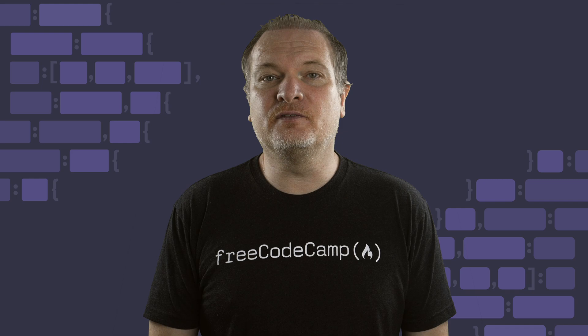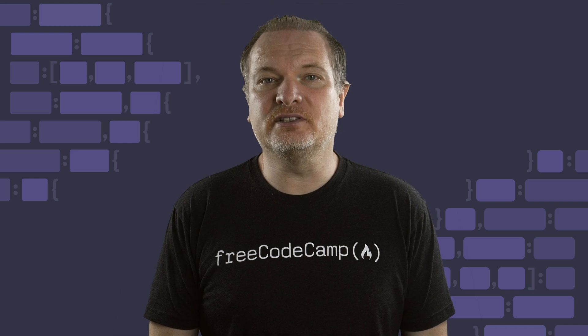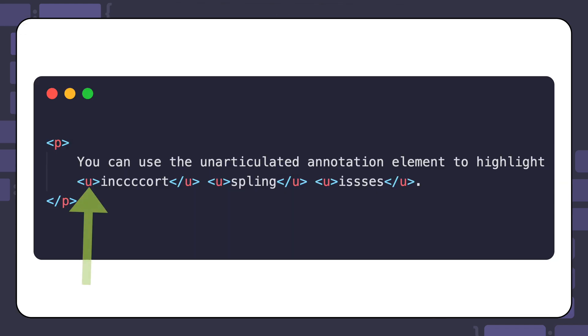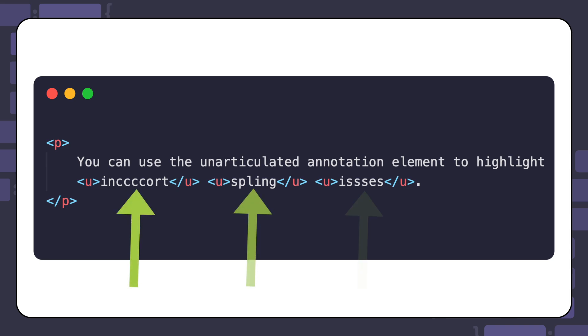Here's an example of using the U element to highlight various spelling errors. In the example, the words 'incorrect,' 'spelling,' and 'issues' are misspelled.